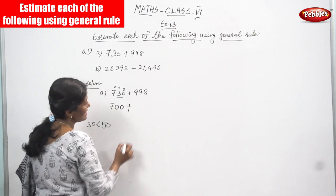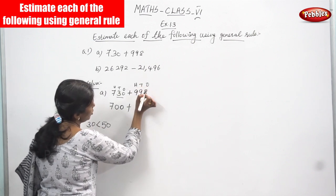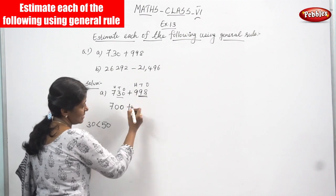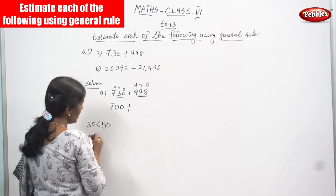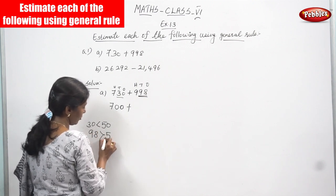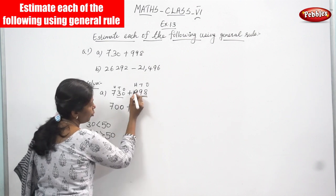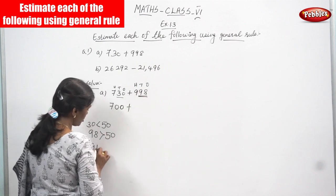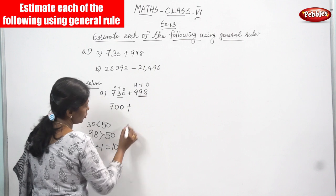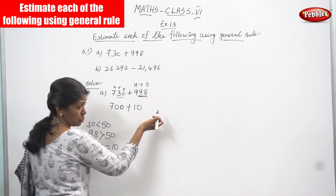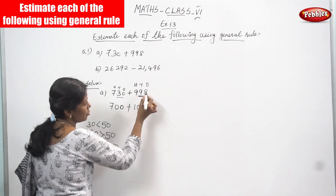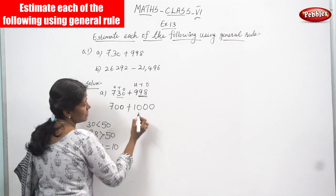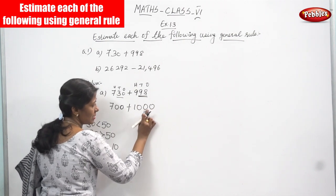Now for the second number, 998. It has 1s, 10s, and 100s places. To round to the nearest 100, you have to consider the 10s and 1s digits — that is 98. Since 98 is greater than 50, you have to add 1 to the 100s place. So 9 plus 1 becomes 10, and the last two digits become 0. The answer is 1000.